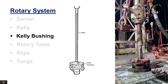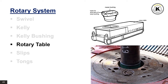The rotary table performs two functions: it transmits rotation to the drill string by turning the kelly joint, and it suspends the drill string weight during connections and trips. The rotary table is usually driven by a chain from the drawworks on mechanical rigs and by its own motor on electrically driven rigs. Some are capable of speeds up to 400 RPM. A rotary table is defined by the size of its central opening, the largest being 37.5 inches.